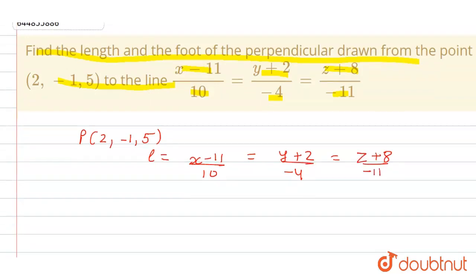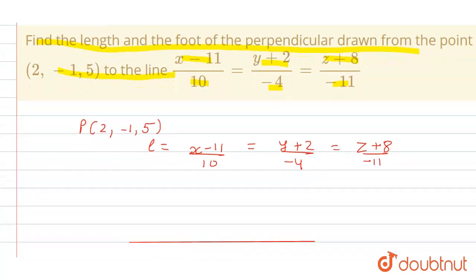So the condition given is like this: we have a line, and now from point P we have to find foot of the perpendicular point, and we have to find PQ also.